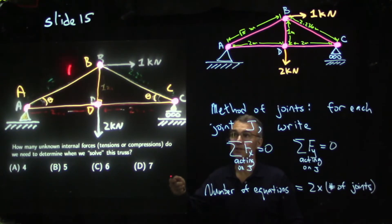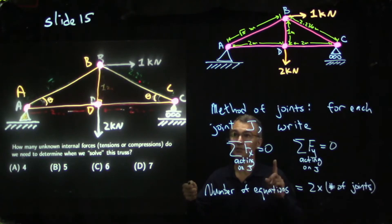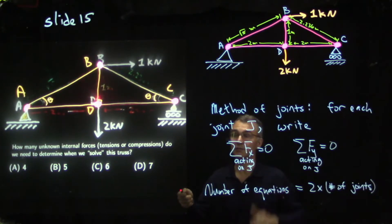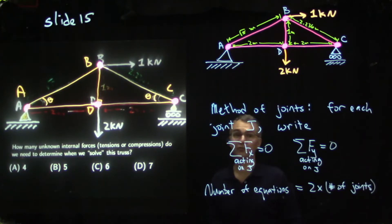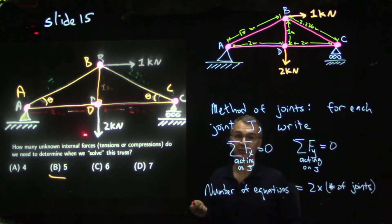If you think of the truss as an object as a whole, bar forces are internal forces, whereas forces exerted by the ground and loads that are applied are external forces. We have five bars — AB, BC, CD, AD, and BD — so that means five unknown internal bar forces to solve for. The answer is B: five unknown internal forces.